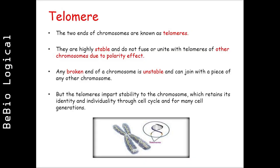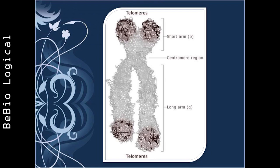The two ends of chromosomes are known as telomeres. They are highly stable and do not fuse or unite with telomeres of other chromosomes due to the polarity effect. Any broken end of a chromosome is unstable and can join with a piece of any other chromosome, but the telomeres impart stability to the chromosome, which retains its identity and individuality through the cell cycle and for many cell generations.